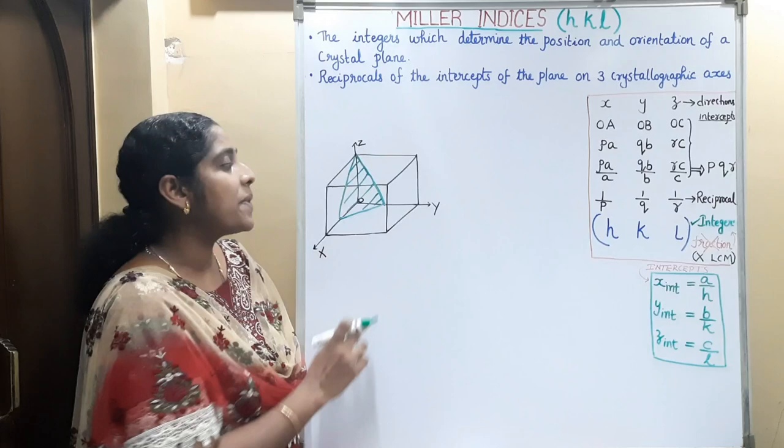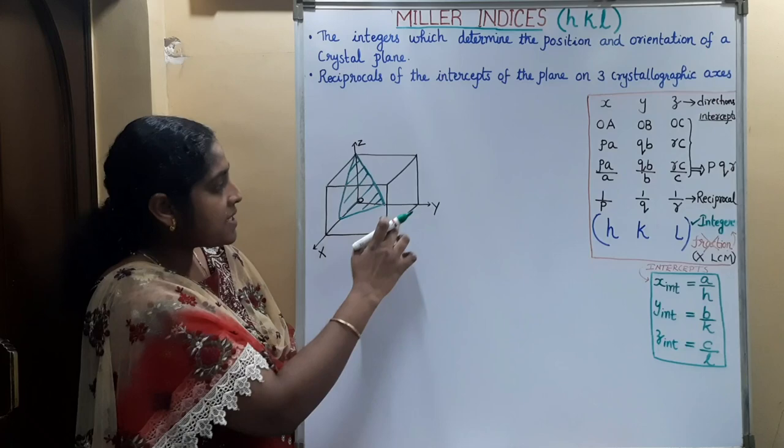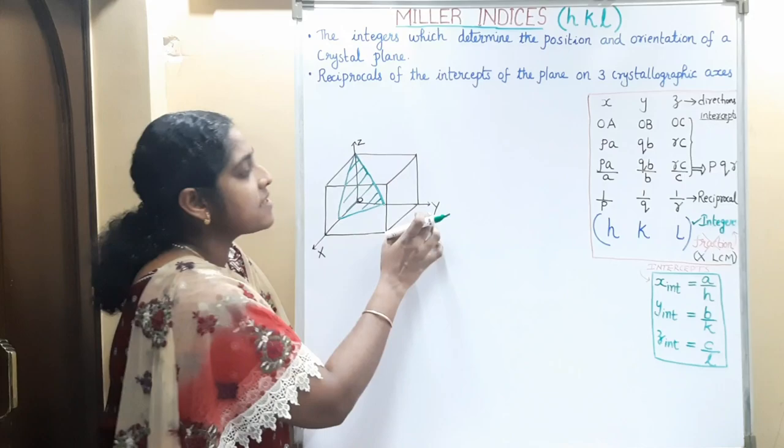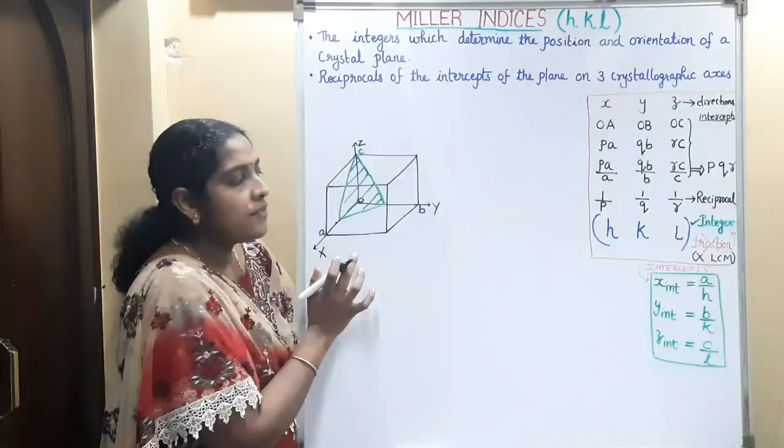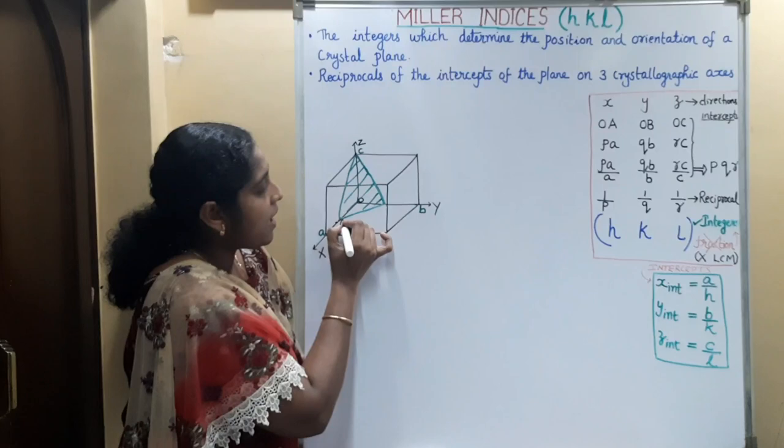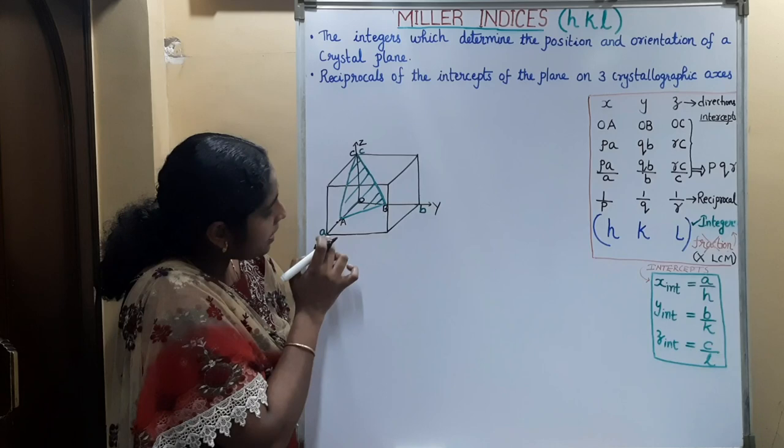Now we can see how to represent a lattice plane in a crystal structure. This unit cell has three crystallographic axes. This is the origin O. Here we can consider the x-axis, y-axis, and z-axis. The side along the x-axis is A, along the y-axis is B, and along the z-axis is C. We can name this lattice plane as A, B, C.